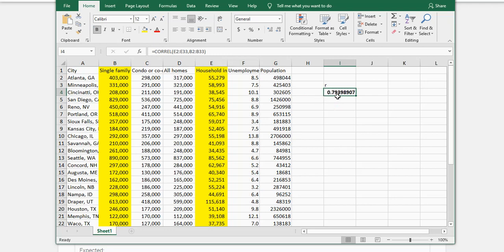So it is 0.7939, or when I round it, I can go 0.7940.